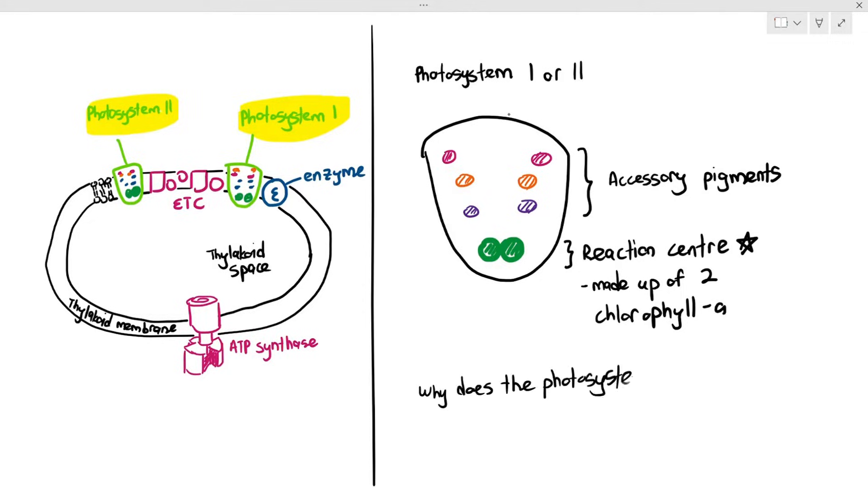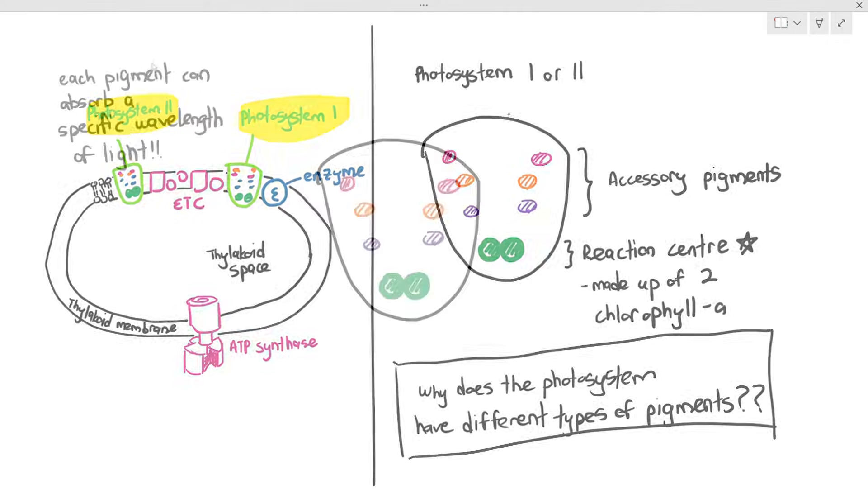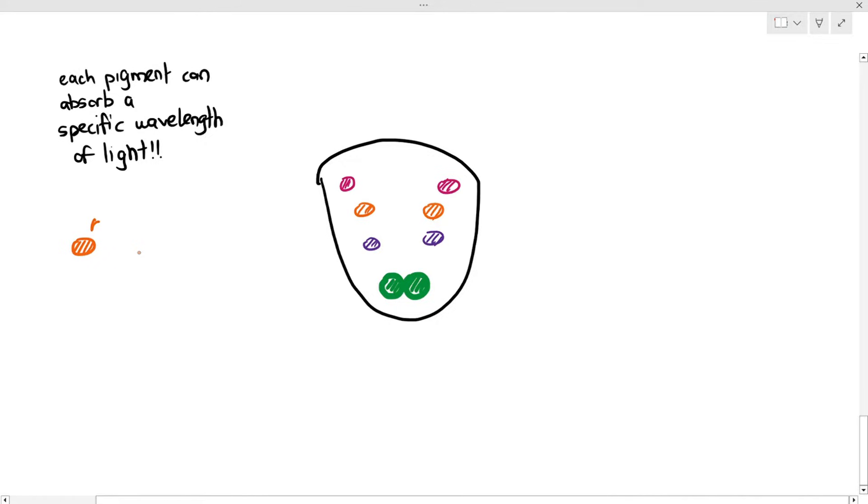Why does the photosystem have different types of pigments? The reason is as follows. Each pigment can absorb a specific wavelength of light. As an example, you can see that there is a pigment, the orange color pigment, and also the purple pigment.